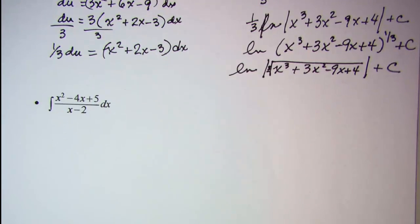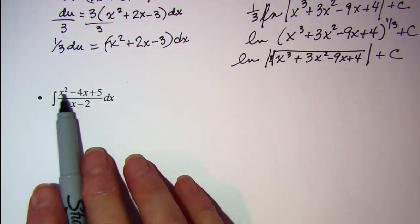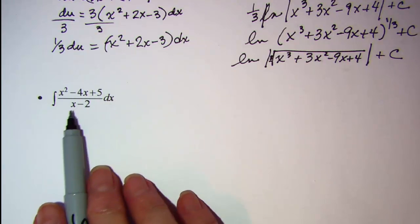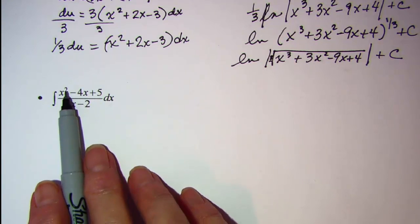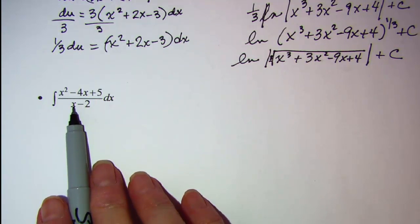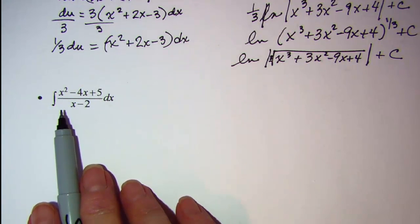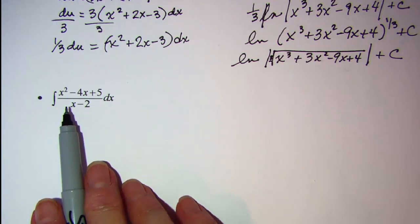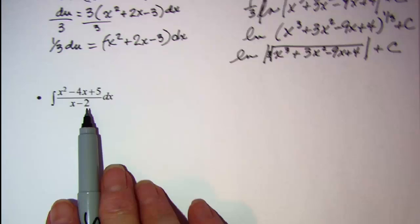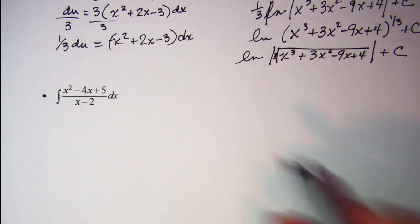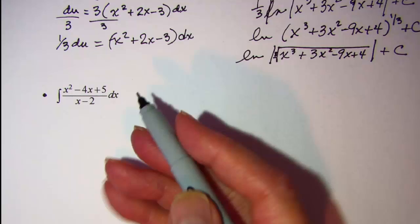Let's do another one. Now on this one we're integrating x squared minus 4x plus 5 over x minus 2 dx. Notice the degree of the numerator is bigger than the degree of the denominator, so as this is, we don't need to use our logarithm rule. However, what we would do to start this problem is divide this out using long division.